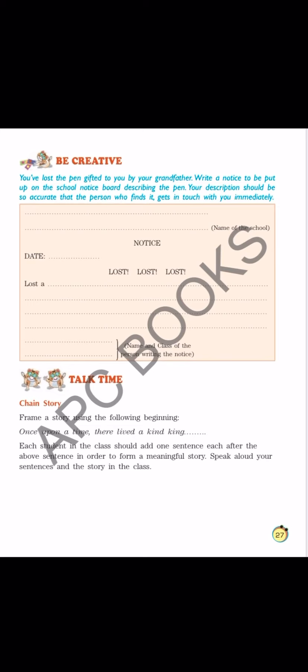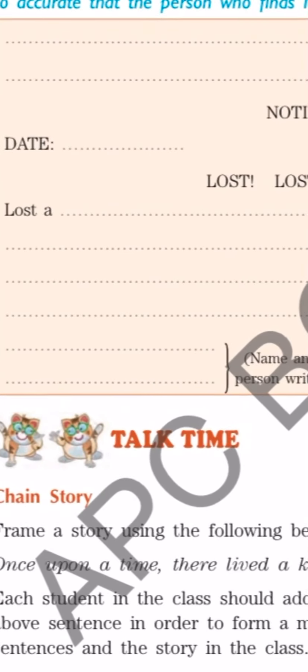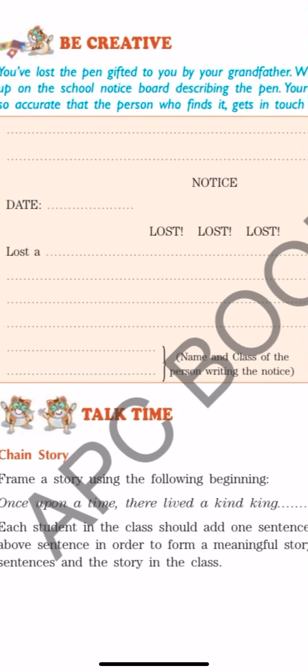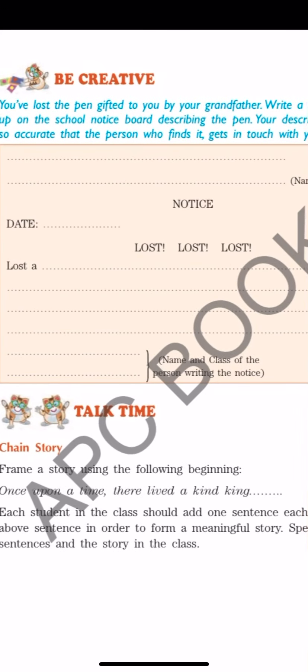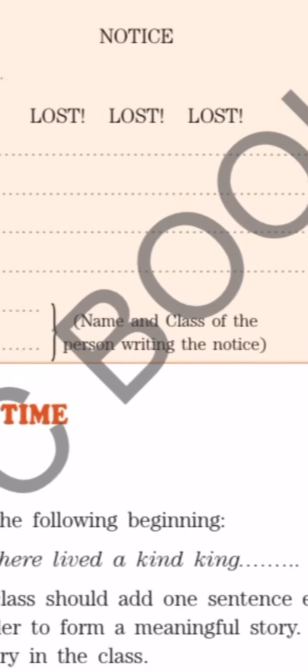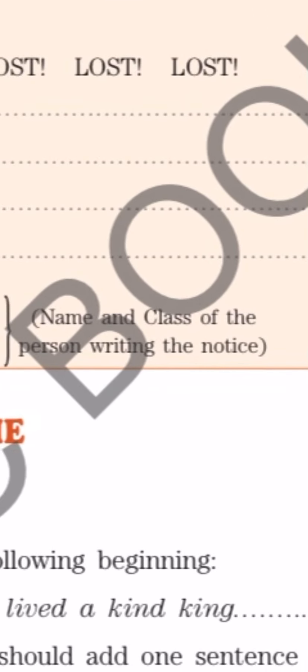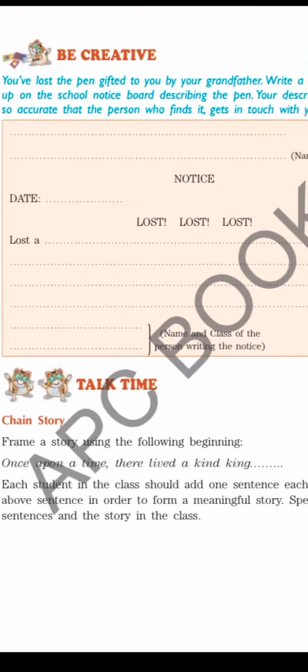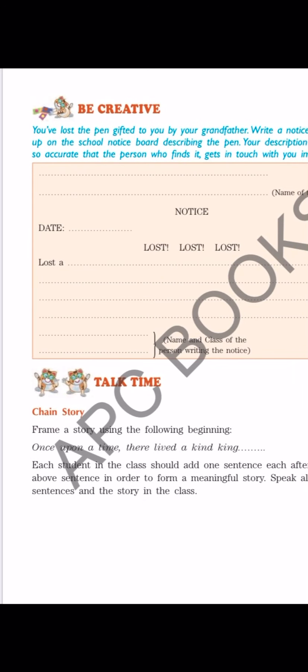Then at last you will write the name and class of the person writing the notice. You will write your name and you will write your class. Please be careful - don't copy down the wrong name. You will write your name. Here it is clearly written: name and class of the person writing the notice. So you are writing the notice, so you will write your name and your class.